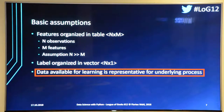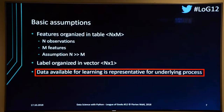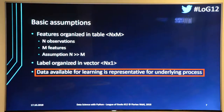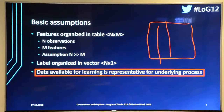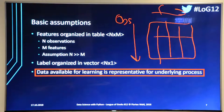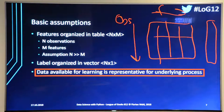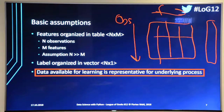So we have this table where we have the observations and the features, and then we have an extra vector called the label. For the Titanic, the label just says whether that person died or survived. The label is usually the most costly part of your data — it's hard to get, but you need it for supervised learning to train the model and to evaluate its performance.